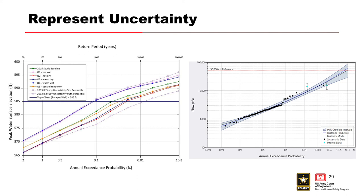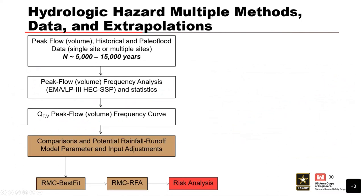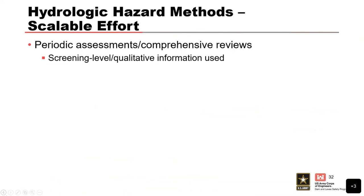We want to do sensitivity analyses for uncertainty. The left-hand picture shows climate sensitivities for different conditions: hot-wet, hot-dry, warm-dry, and warm-wet. The workflow slides show: flow data on the left would be used in RMC Best Fit to develop a flow frequency curve, which is then put into RMC RFA to develop a stage frequency curve, which is then used in the risk analysis. A parallel workflow uses precipitation frequency information like NOAA Atlas 14 in a similar manner.